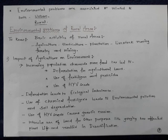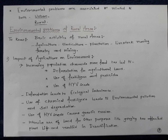The basic activities of rural areas — such as agriculture, horticulture, plantation, livestock rearing, forestry, and mining — have an adverse effect on the environment. As far as agriculture is concerned, it has a set of adverse effects on the environment. The increasing population demands more food, and this has led to deforestation for agricultural land.